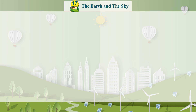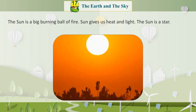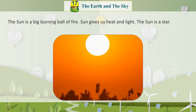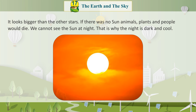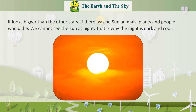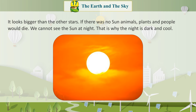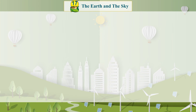The Sun: The sun is a big burning ball of fire. The sun gives us heat and light. The sun is a star. It looks bigger than the other stars. If there was no sun, animals, plants, and people would die. We cannot see the sun at night. That is why the night is dark and cool.